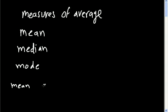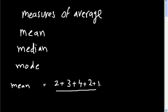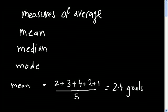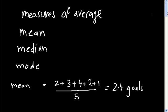The mean is basically the average score. For example, on a given Saturday there were two goals in one game, three in another, four in another, two in another, and one in another. The mean score per game would be all of these added up divided by the number of games, which is five — so 12 divided by 5 equals 2.4 goals.